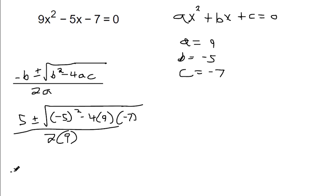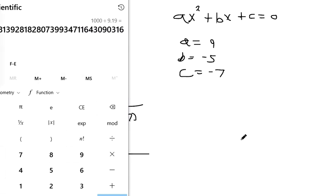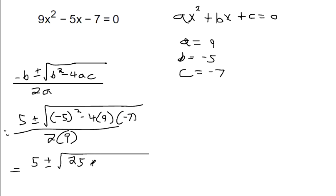And then if we simplify inside the radical, we've got to do the exponents first. So negative 5 times itself, that's what squaring means. And same step here. If you multiply negative 4 times 9, it makes negative 36. Negative 36 times 7 is going to make a positive. So that would be plus 252 instead of minus 252.